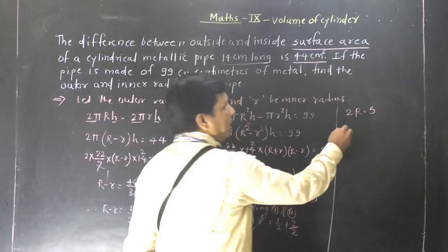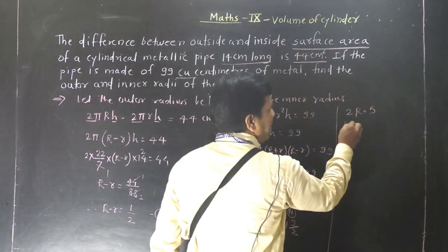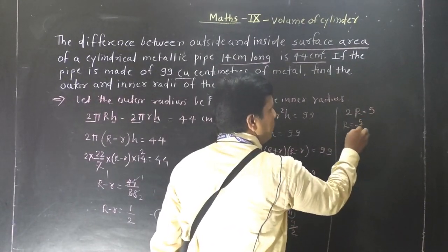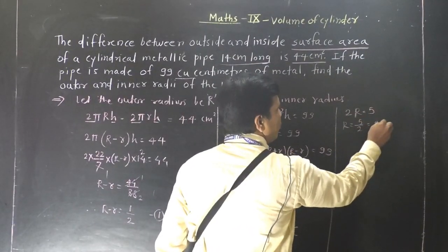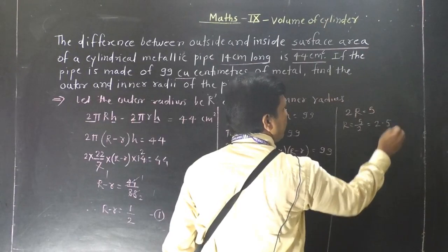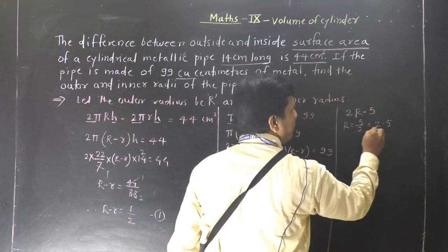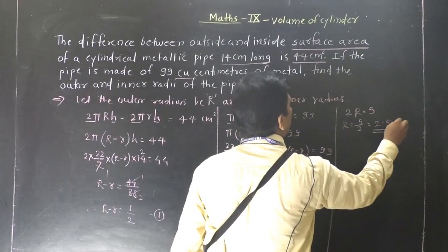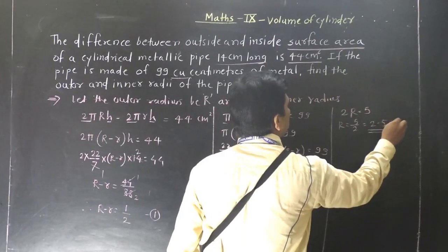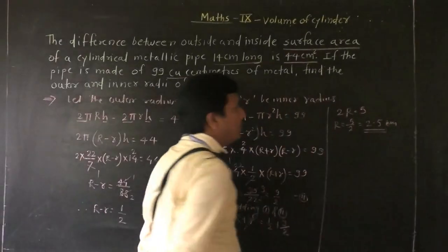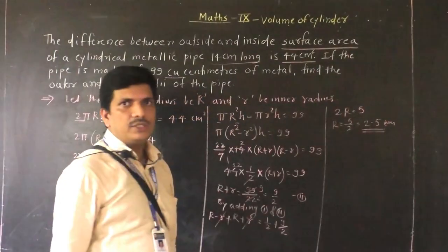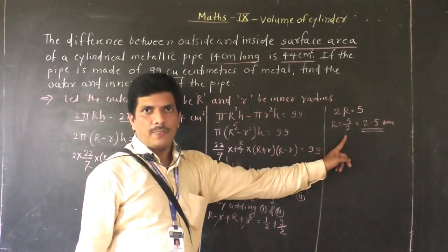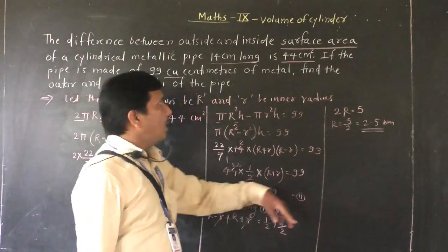Therefore capital R equals 5 divided by 2, which is 2.5 centimeters. So the outer radius is 2.5 centimeters.